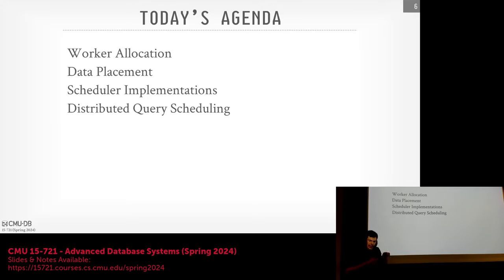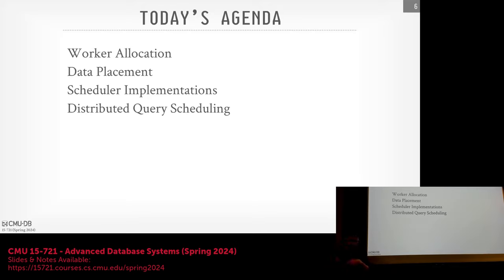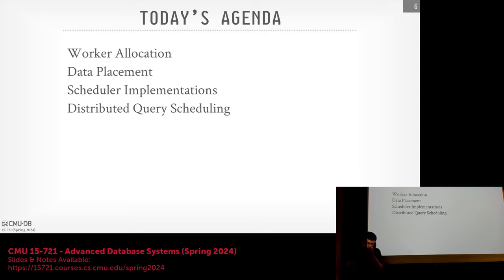The Hyper and Umbra schedulers have dedicated worker pools that just crunch through tasks as fast as they can. The HANA approach tries to be more sophisticated — some worker threads can be asleep or parked. We'll also see the trade-off between work-stealing and non-work-stealing.